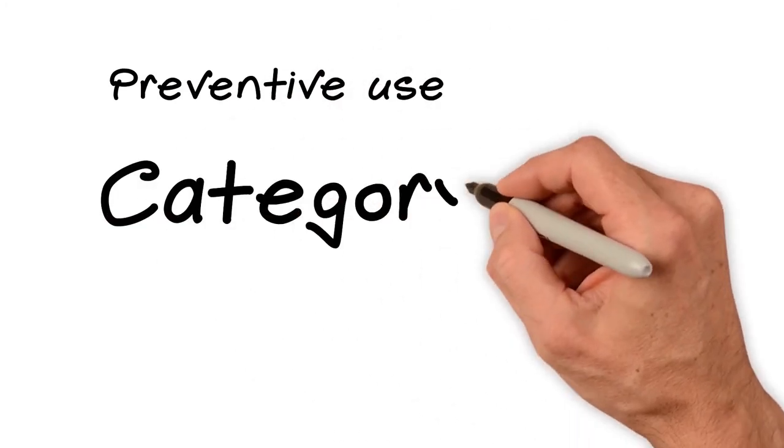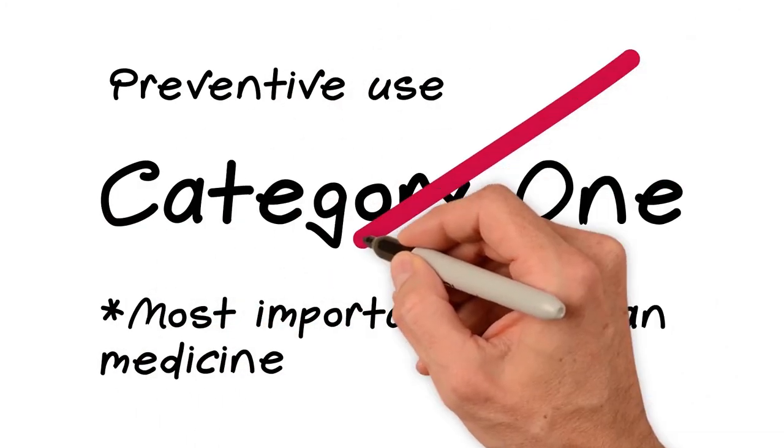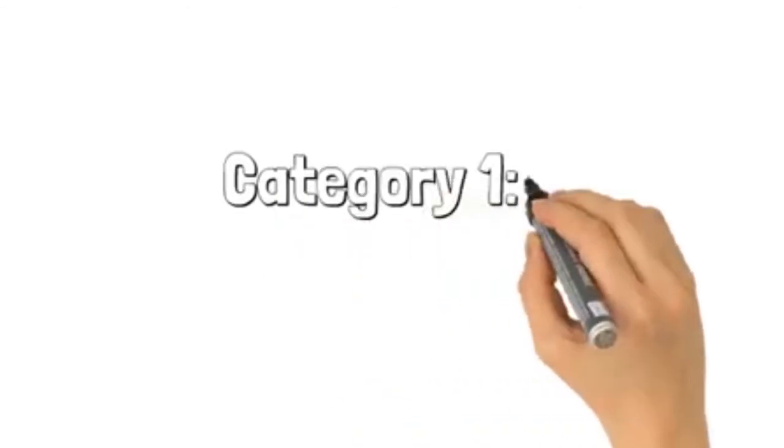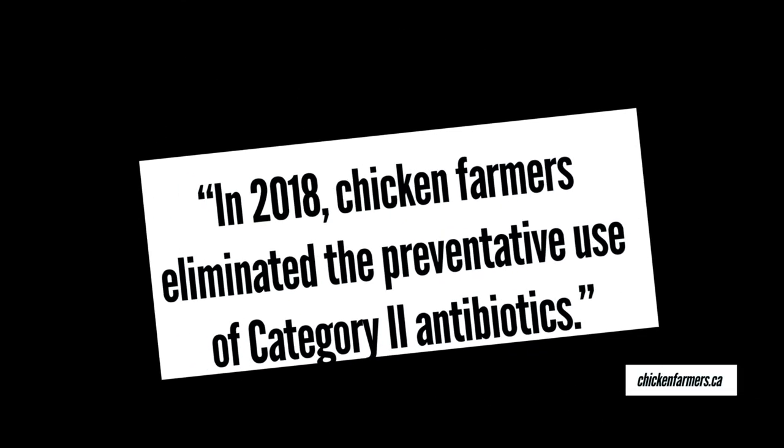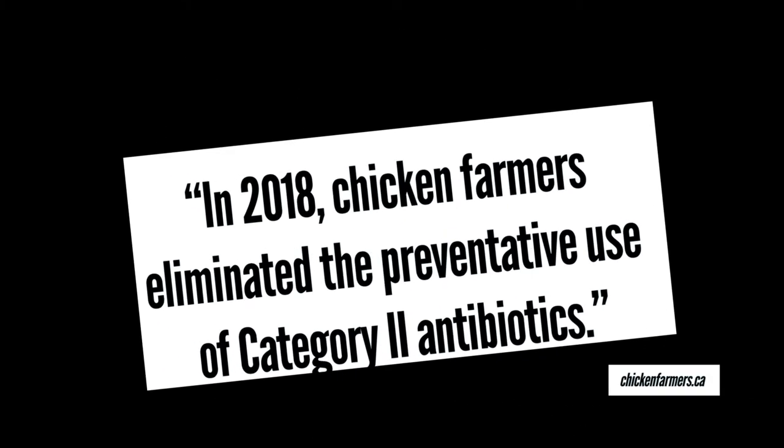In fact, the chicken industry banned the preventative use of Category 1 antibiotics in 2014. It's a big step and demonstrates that chicken farmers are committed to ensuring the future effectiveness of antibiotics for humans and animals.